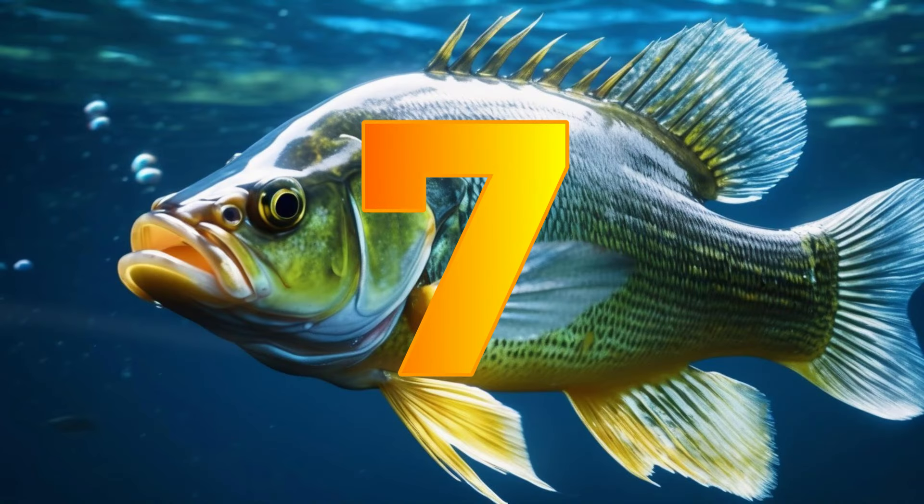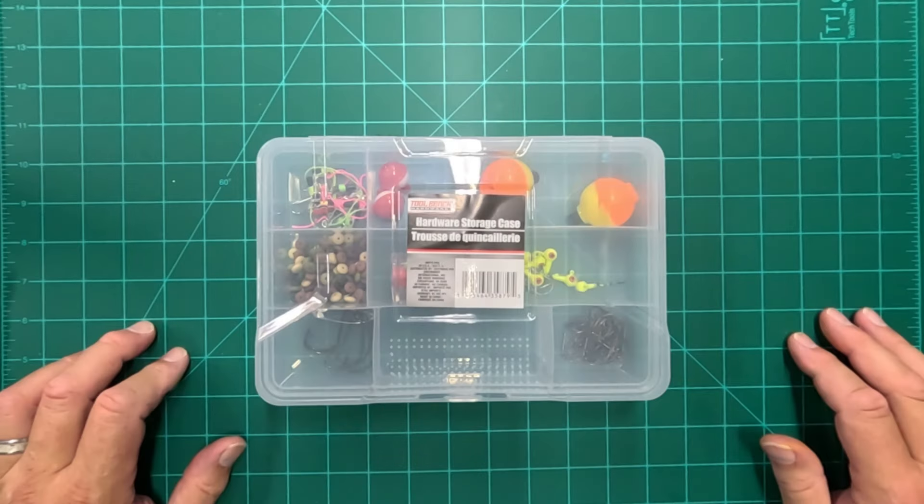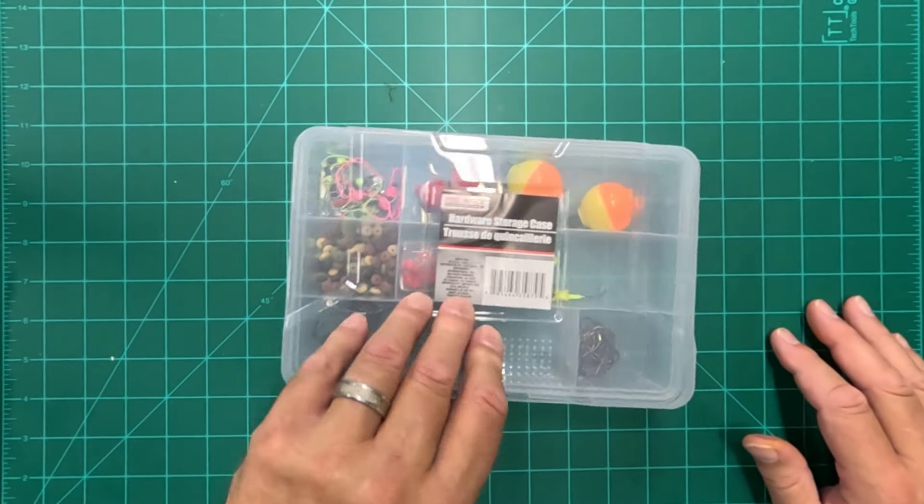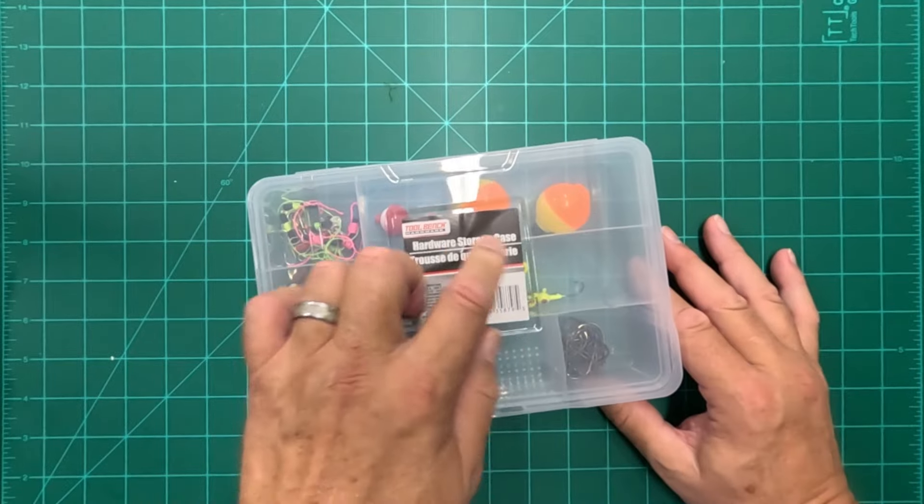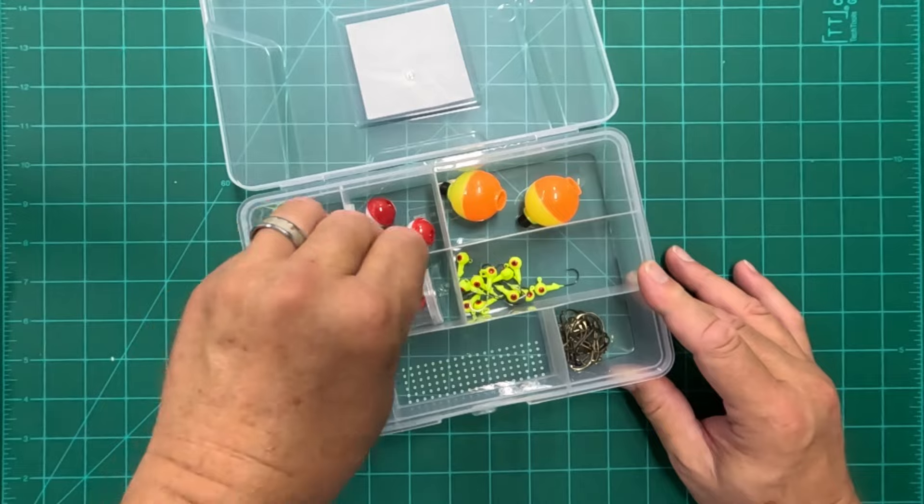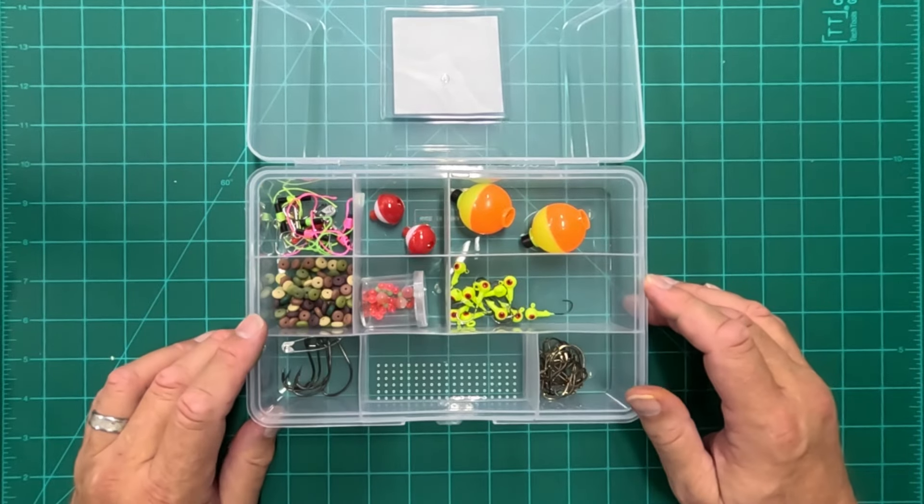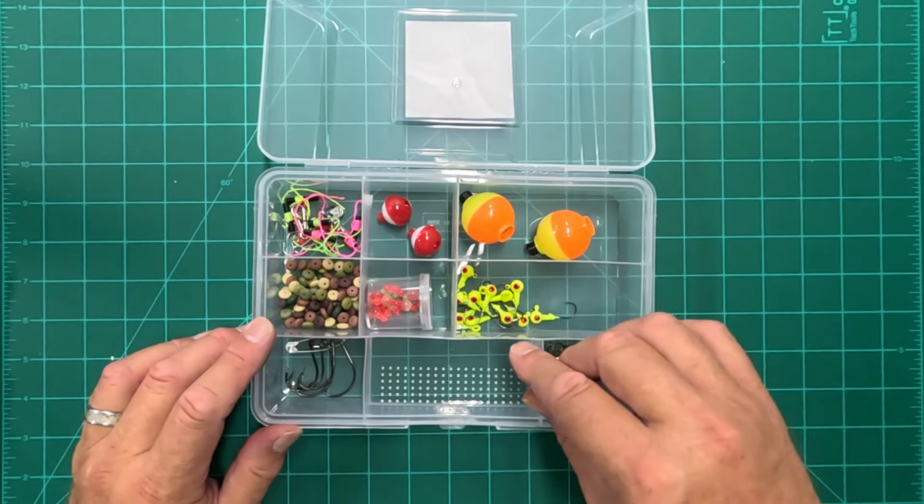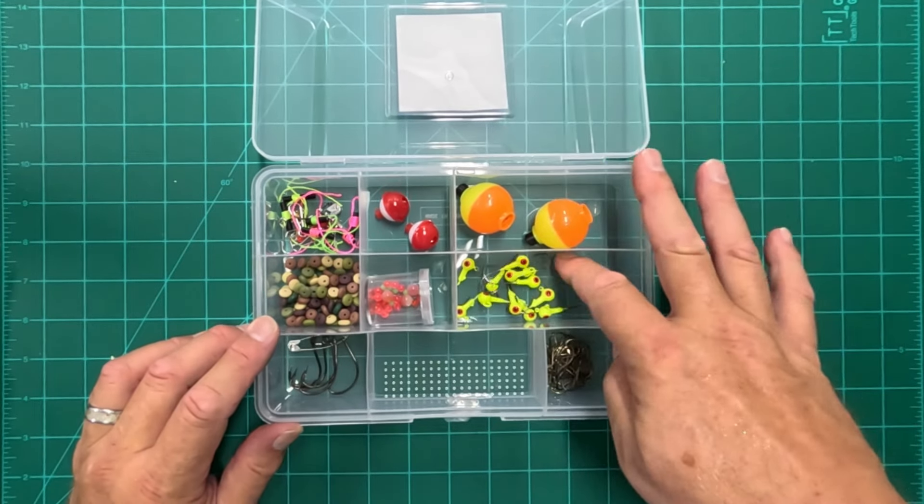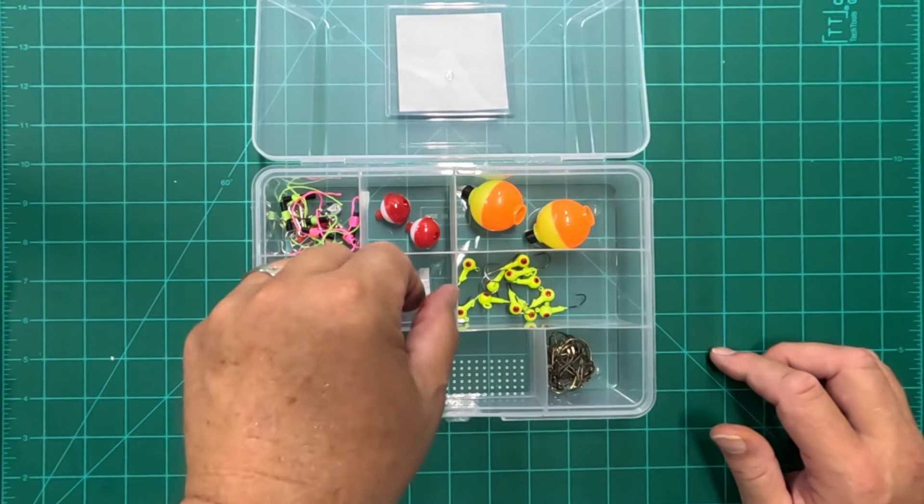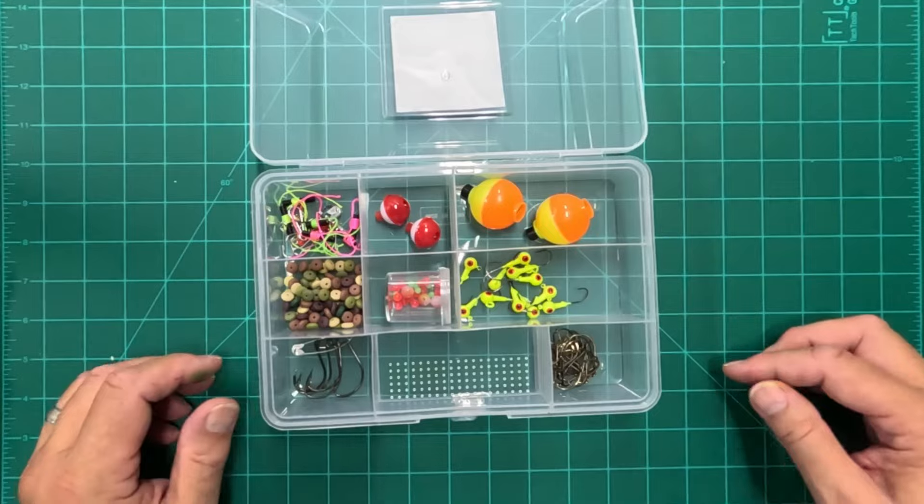Hack number seven. I needed one more case for my backpack tackle box. So over in the hardware section at the Dollar Tree, they have these hardware storage cases, and they're a little bit more substantial plastic than some of the cases you find in the craft department. It has rigid compartments that won't give out, and your hooks can't slide underneath the dividers. And they're a little bit deeper, so you can hold things like the bigger bobbers, little containers and whatnot.